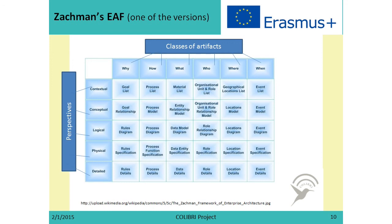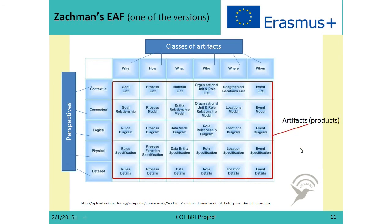Now let us have a closer look at one of the enterprise architecture frameworks, which is the Zachman Framework. Here in the middle are artifacts of enterprise architecture. We can see that these artifacts can be classified according to why things happen, how they happen, what is involved in these activities, who is involved, where they happen, and when. We can also represent this knowledge from different perspectives: contextual, conceptual, logical, physical, and detailed.